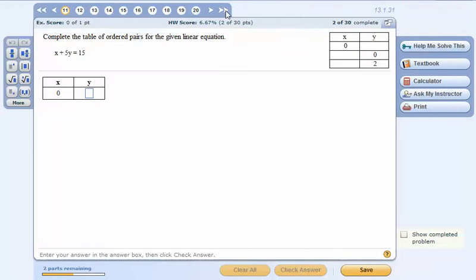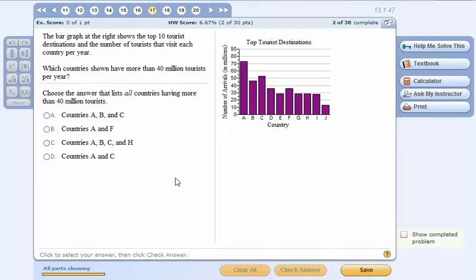Somewhere up in here they have some that ask you to read graphs like this one. Usually they're pretty clear to read. There's no way to enlarge this one. This one says the bar graph at the right shows the top ten tourist destinations and the number of tourists that visit each country per year. Which countries shown have more than 40 million tourists.